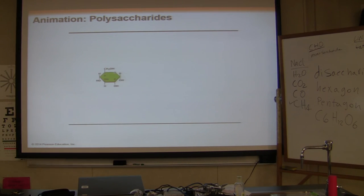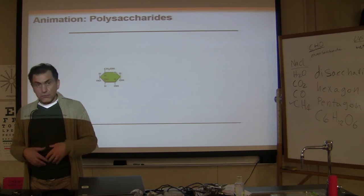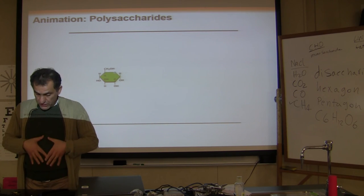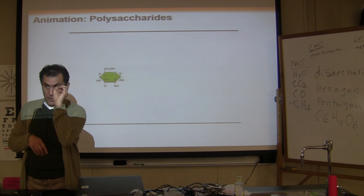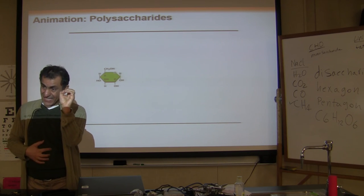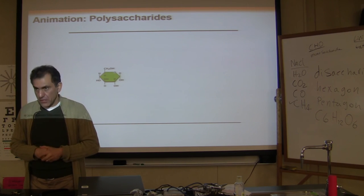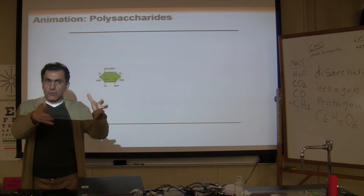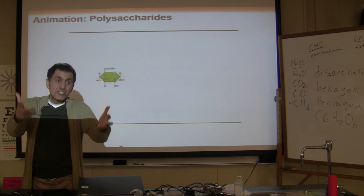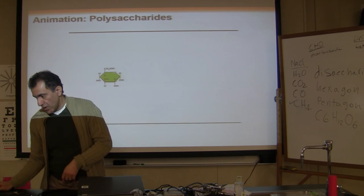Starch from your breakfast — cereal, potato, bread — goes to your intestine, breaks down through hydrolysis into single sugar molecules, which your blood carries to muscles and liver. In muscles and liver they're put back together as glycogen through dehydration. During the day that glycogen breaks down to give you energy, so you don't have to eat constantly like hummingbirds.